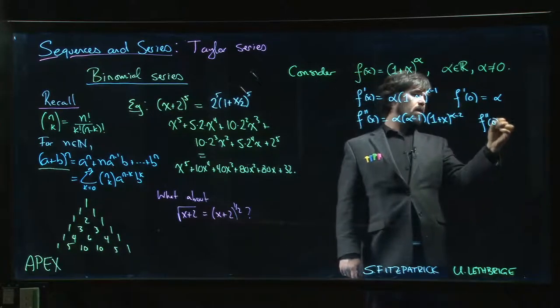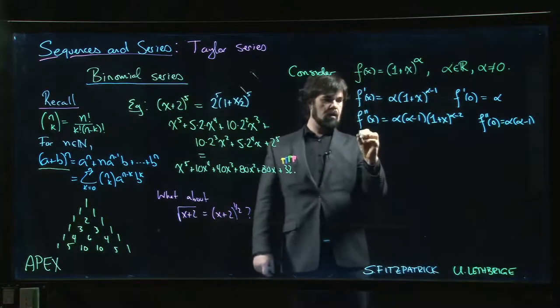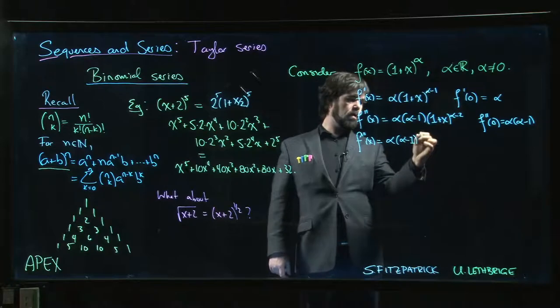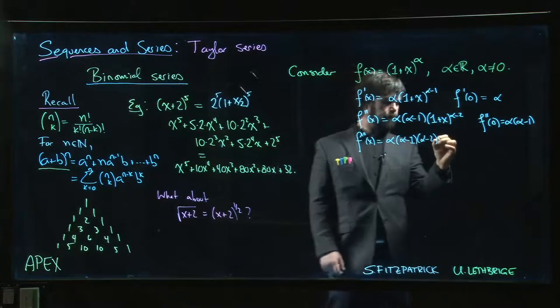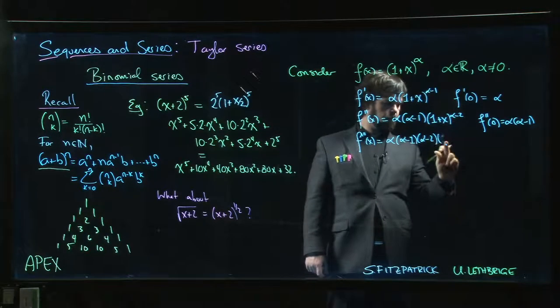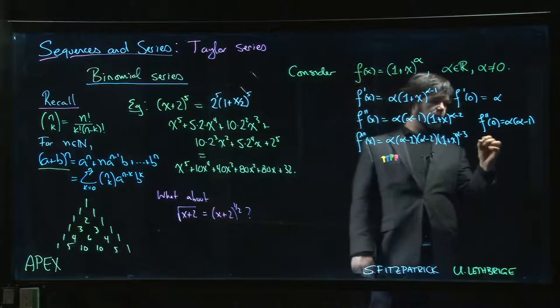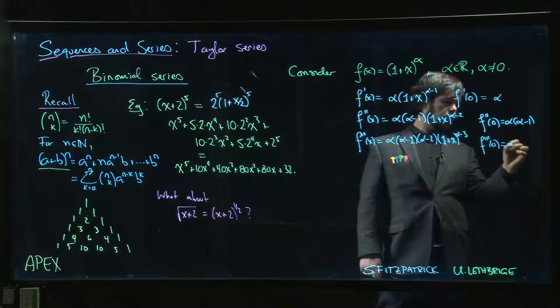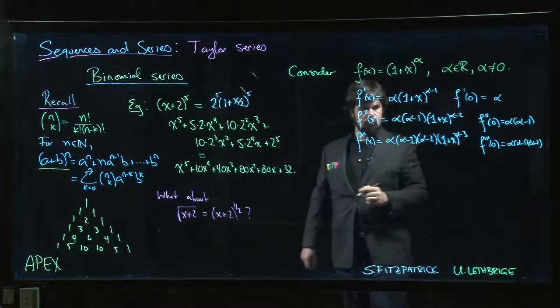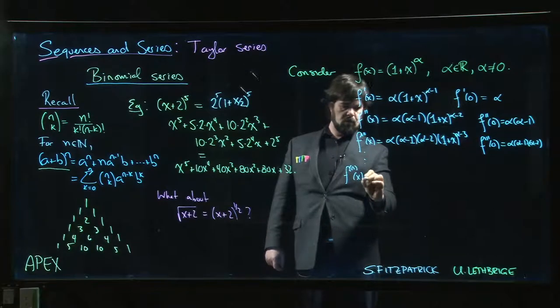Alpha minus 1, right. Third derivative we get alpha times alpha minus 1 times alpha minus 2, and then 1 plus x to the alpha minus 3. So the third derivative at 0 is alpha times alpha minus 1 times alpha minus 2.